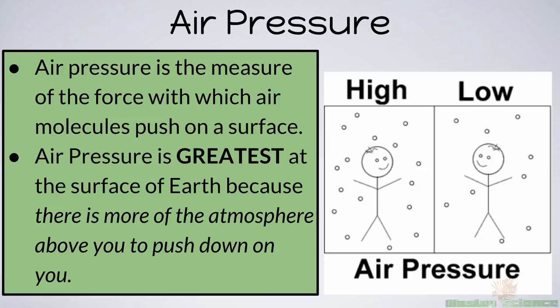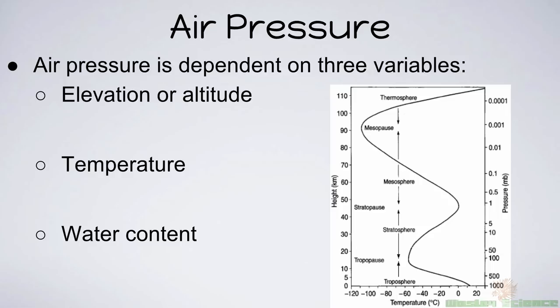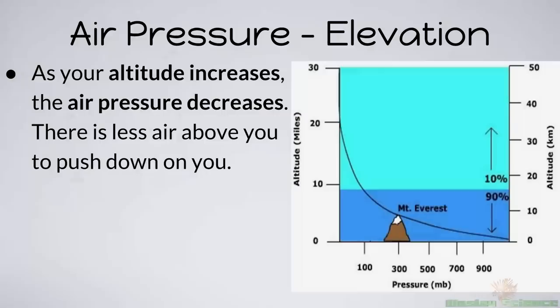Let's get on to air pressure. Air pressure is the measure of the force with which air molecules push on the surface. It's really important to understand that air pressure is greatest at the surface of the Earth, because there's more atmosphere above you to push you down. Air pressure is dependent on three variables: elevation or altitude, temperature, and water content. As your altitude increases, the air pressure decreases, because there's less air above you to push down on you.